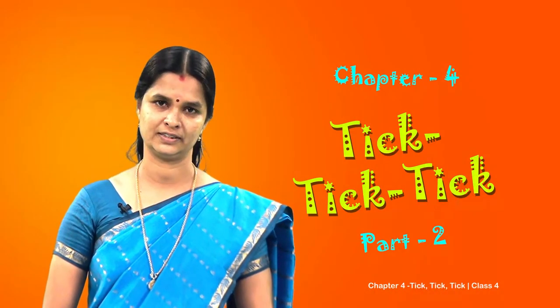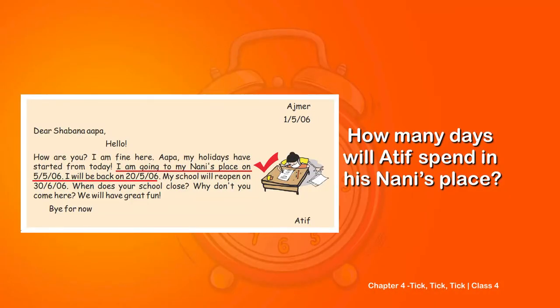Let us go back to the letters. Looking at the letters, can you find the following? The first question is: how many days will Atif spend in his nanny's place? Check the letter. It is written that he is going to his nanny's place on 5-5-2006 and will be back on 20-5-2006.